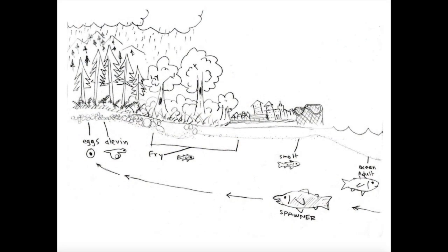Let's put all that information together and look at this illustration. You'll notice that the egg and Alvin on the left-hand side are living up in the mountains, in the headwaters of the San Lorenzo River. As they get bigger and are able to swim, the fry is starting to move closer to the ocean. The smolt lives in the estuary — where the salt water and fresh water mix, right next to the Santa Cruz Beach Boardwalk. The ocean adult is in the ocean, and the spawner is returning back upstream to the headwaters where they were hatched.